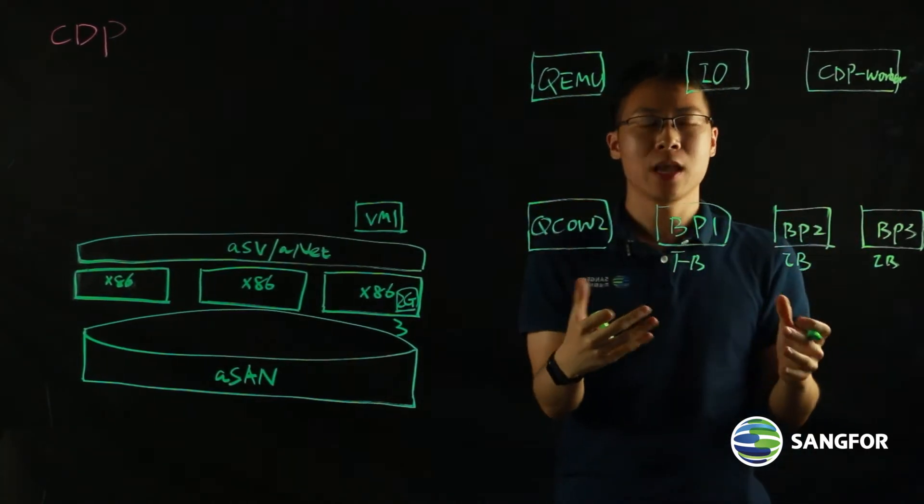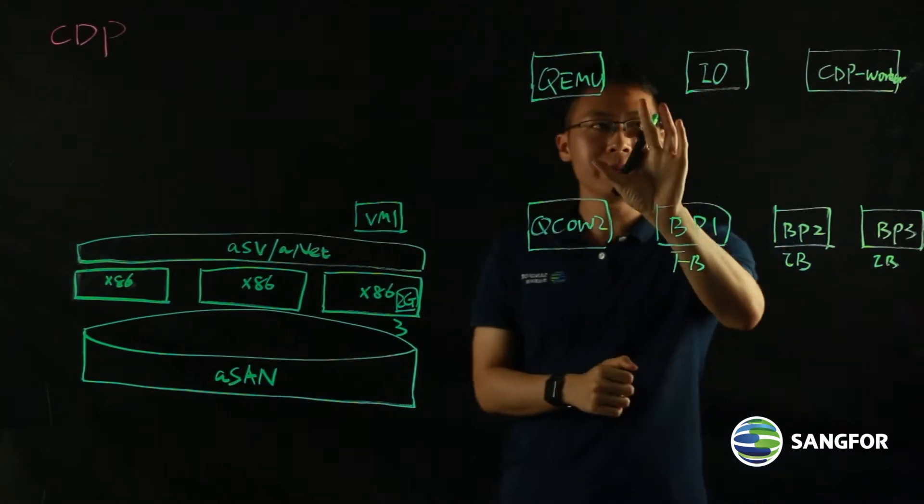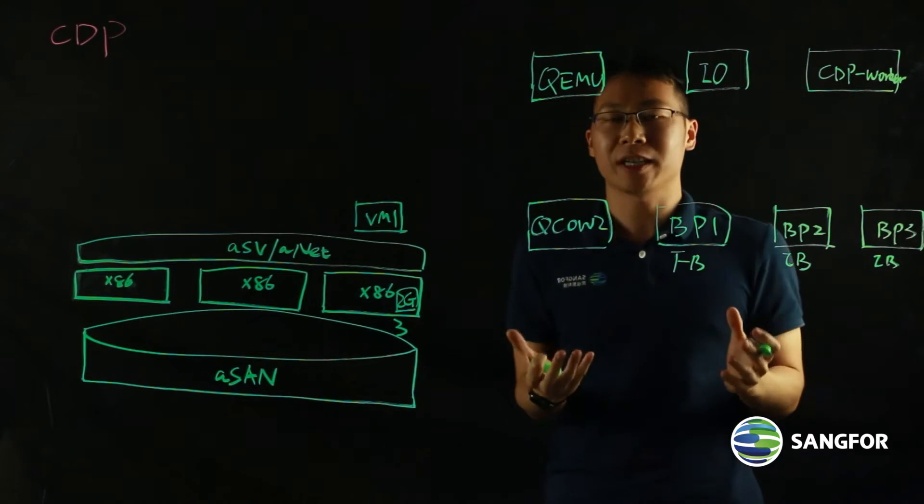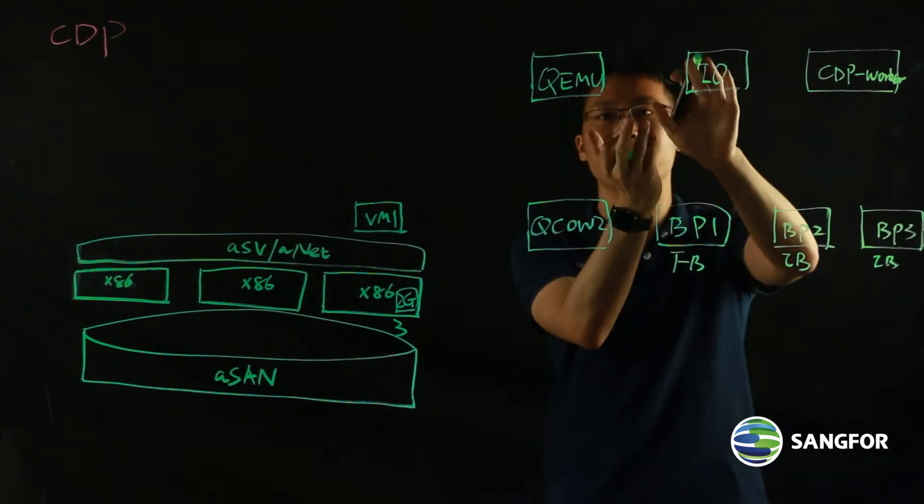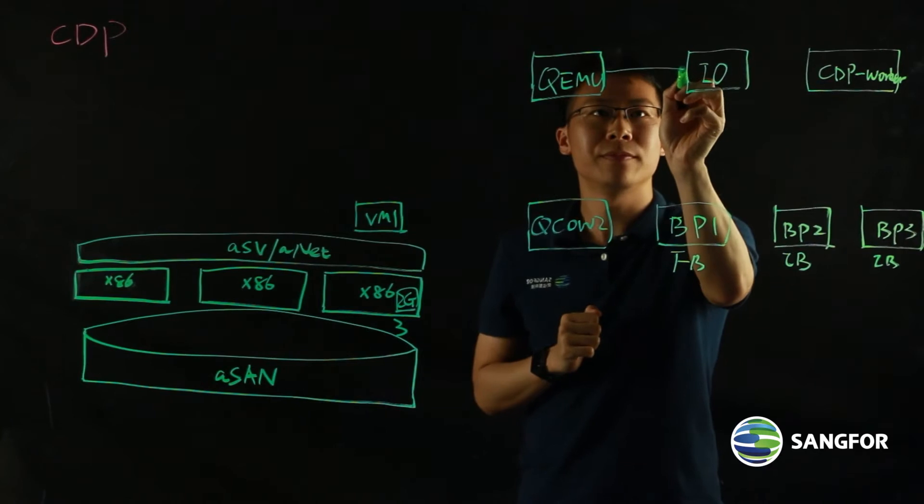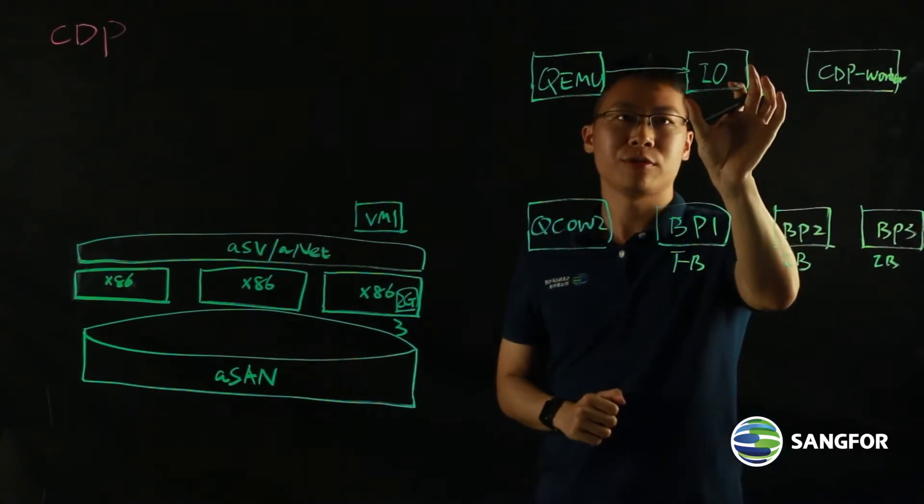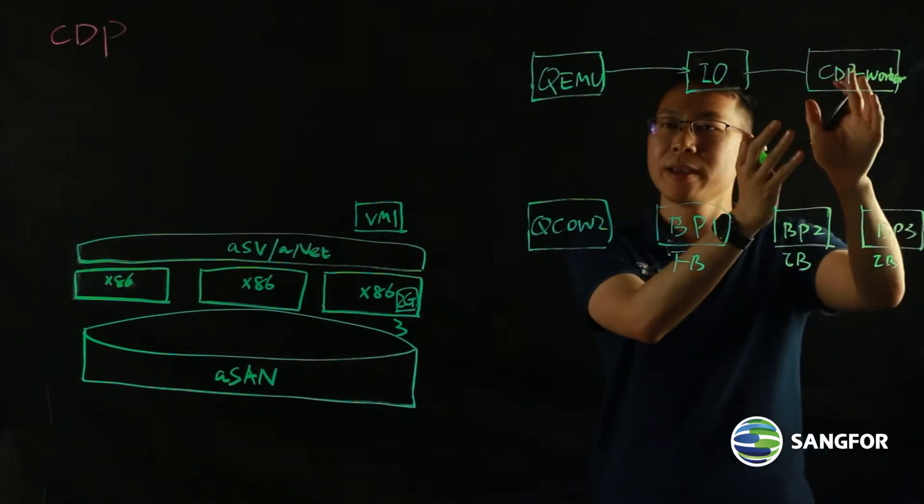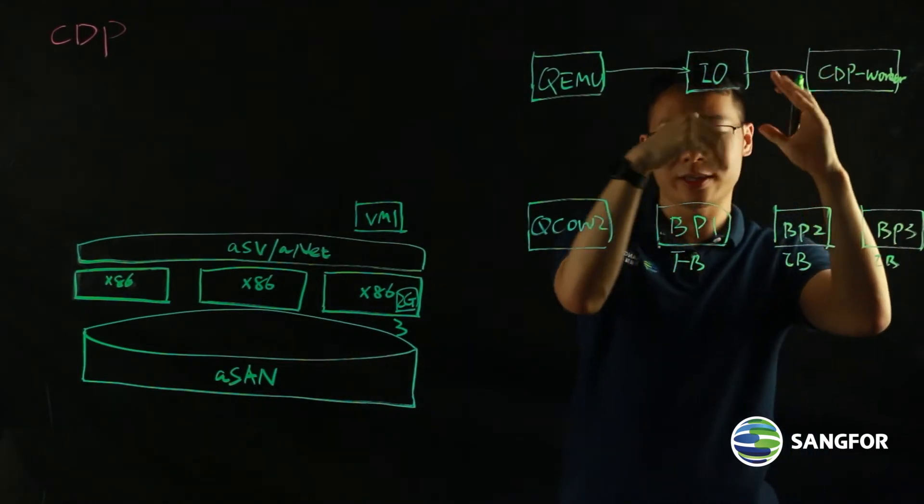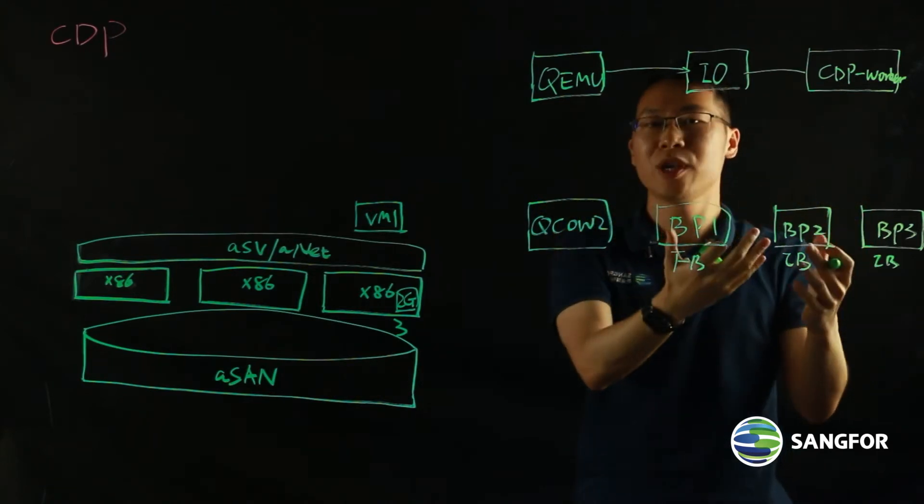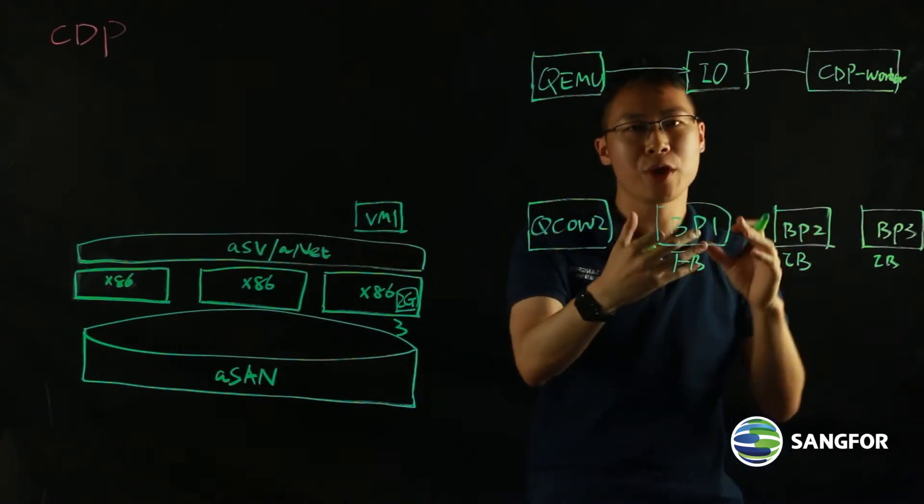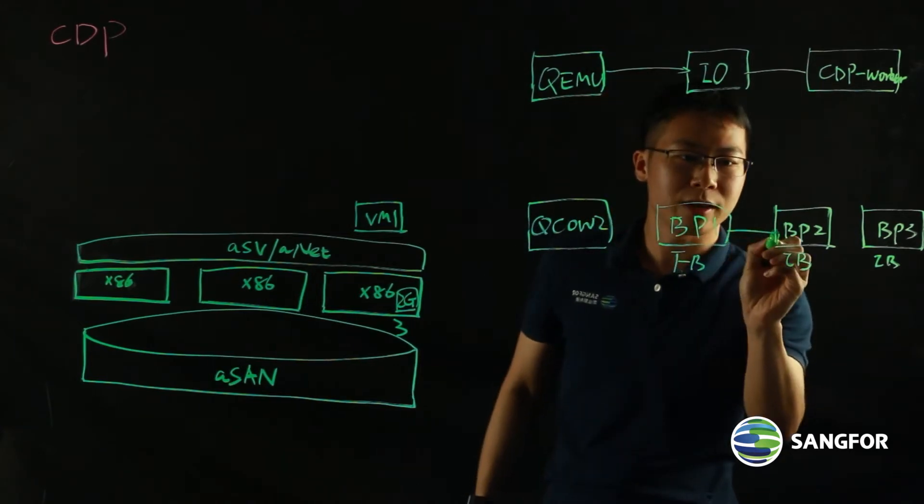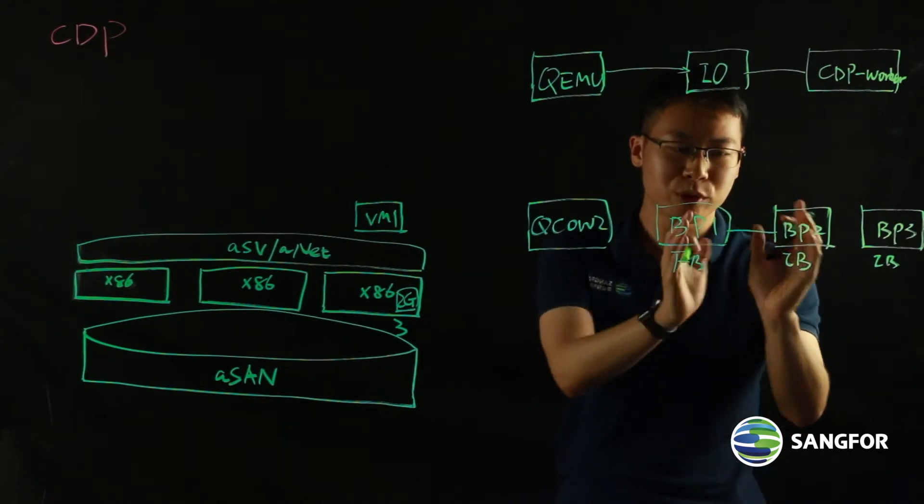So how is CDP working with our backup? It works like this. After the backup is initialized, every one second or five seconds, customer can choose to synchronize the IO to the IO cache. And then the CDP worker will copy that IO logs to the CDP repository.